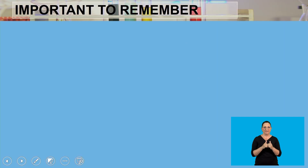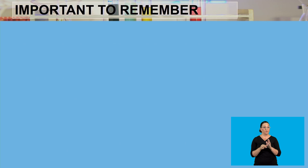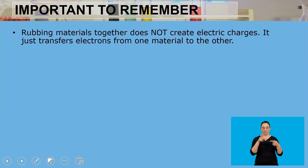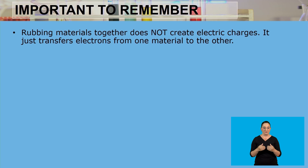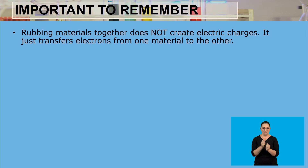Now, what's important for you to take away from this lesson is the following. Firstly, always remember that rubbing materials together does not create electric charges — it just transfers electrons from one material to the other. Whenever we rub two materials together, we are not creating electric charges; we are simply transferring electrons from one material to the other.